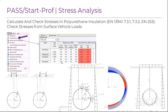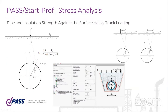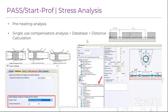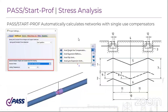StarProf can analyze the stresses in polyurethane foam insulation. The friction forces acting on the insulation must be passed from the insulation to the steel pipe, so the adhesion must be very strong. StarProf checks the insulation stresses according to EN 253 code automatically, combining results from the cross-section nonlinear finite element model and the beam element pipeline model to calculate equivalent stresses and tangential stresses in the hoop and axial directions. StarProf can also analyze insulation and pipe under external loads on the ground surface, such as from heavy trucks above the pipe. It can also take into account preheating and the single-use compensator, and can calculate the distance between single-use compensators.